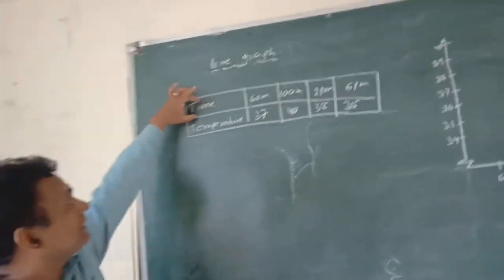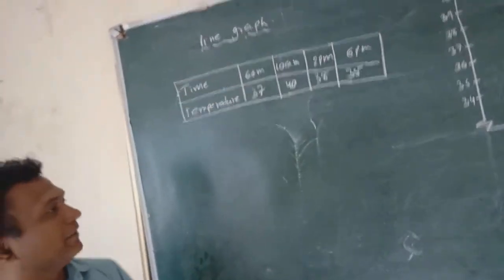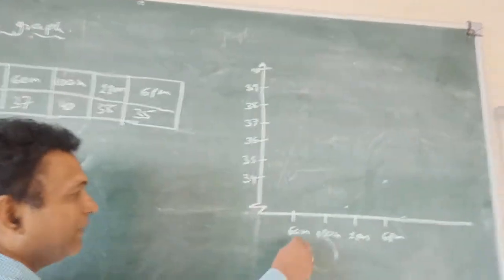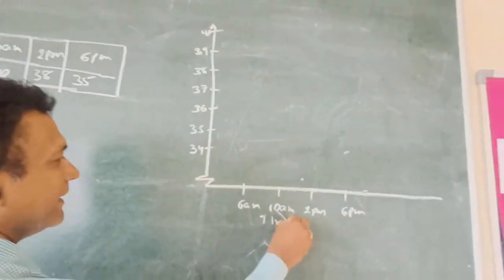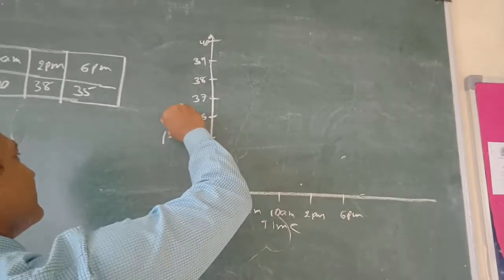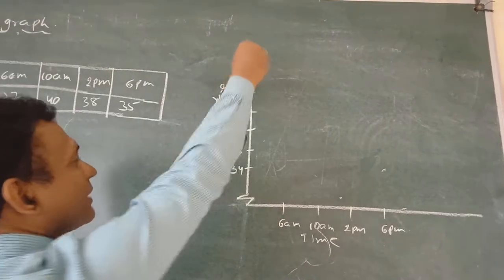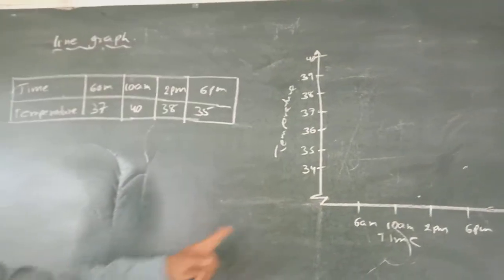Line graph: the time and temperature will be given, so what we will do is write the time on the x-axis and temperature on the y-axis. Temperature will be written on the y-axis, and we are starting from 34.